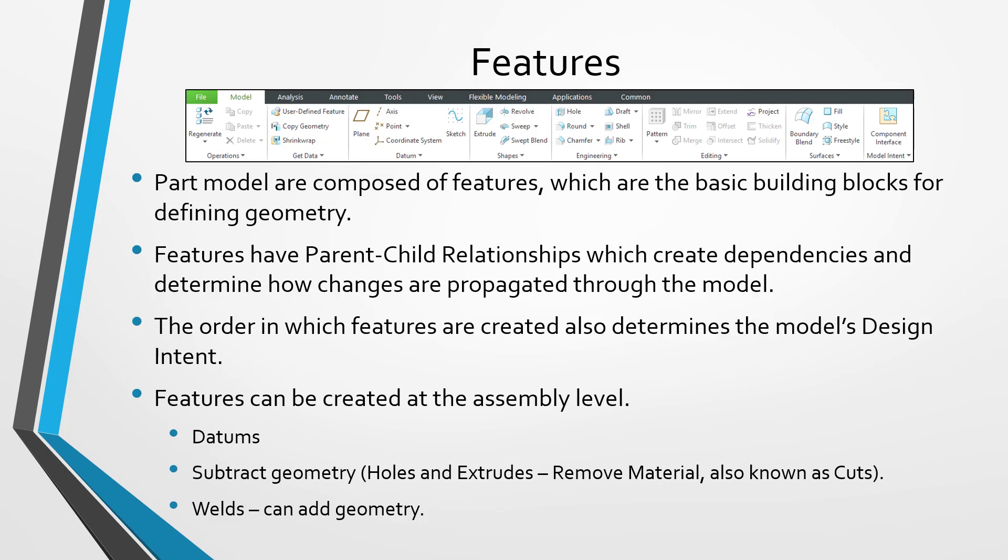Your parent-child relationships determine how your parts are parametric — when you make a change to one object, that's going to propagate changes throughout your model through those parent-child relationships. Another important aspect of modeling in Creo Parametric is that you have a model tree that lists the features in your part in the order in which they are regenerated. The order in which your features are created and appear in the model tree also affects how changes are propagated throughout the model.